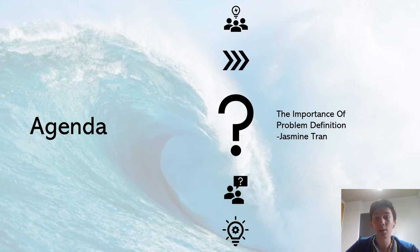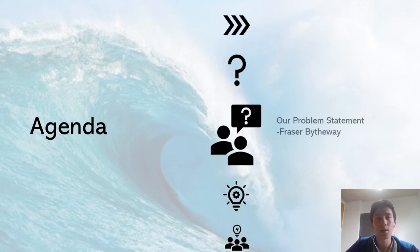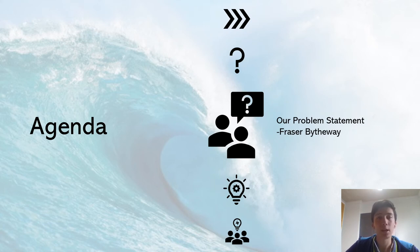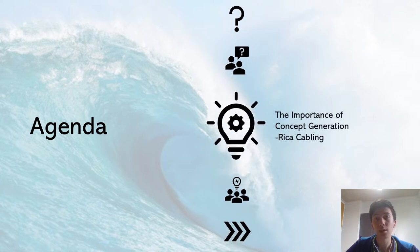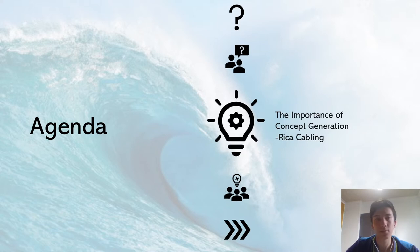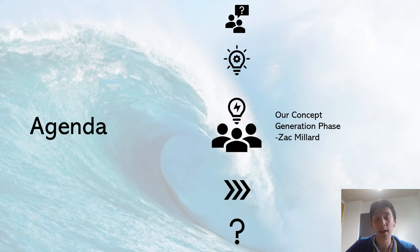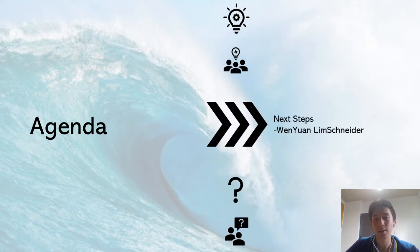Our team includes Jasmine, who will discuss the importance of the problem definition design phase; Fraser, who will justify our problem statement; Rika, who will discuss the importance of concept generation; Zach, who will outline our concept generation phase; and finally me, who will outline the next steps in our design process.